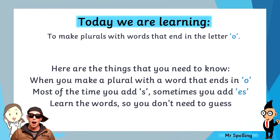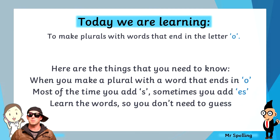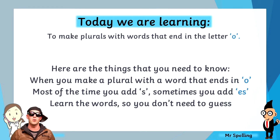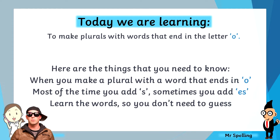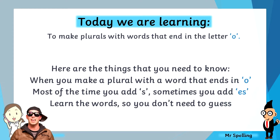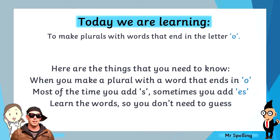So how are we going to remember all of that information? Well, this is Mr. Spelling's YouTube channel, after all — you know the spelling rules are going to be in a rhyme. So to sum up: you can learn all those guidelines, but the key takeaway is most of the time just add S to plurals that end in O, but sometimes add ES. And yes, you might have to learn the words that end in ES. So this is our spelling rule today — let's say it with me.